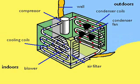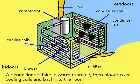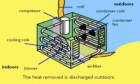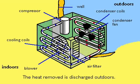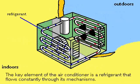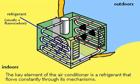Air conditioners are heat exchangers. They take warm air from a room, blow it over cooling coils to remove the heat, and then return it to the room. The heat absorbed by the cooling coils is then blown outdoors. The transfer agent in this exchange is called a refrigerant, which moves between a gas state and a liquid state as it flows through the air conditioner.